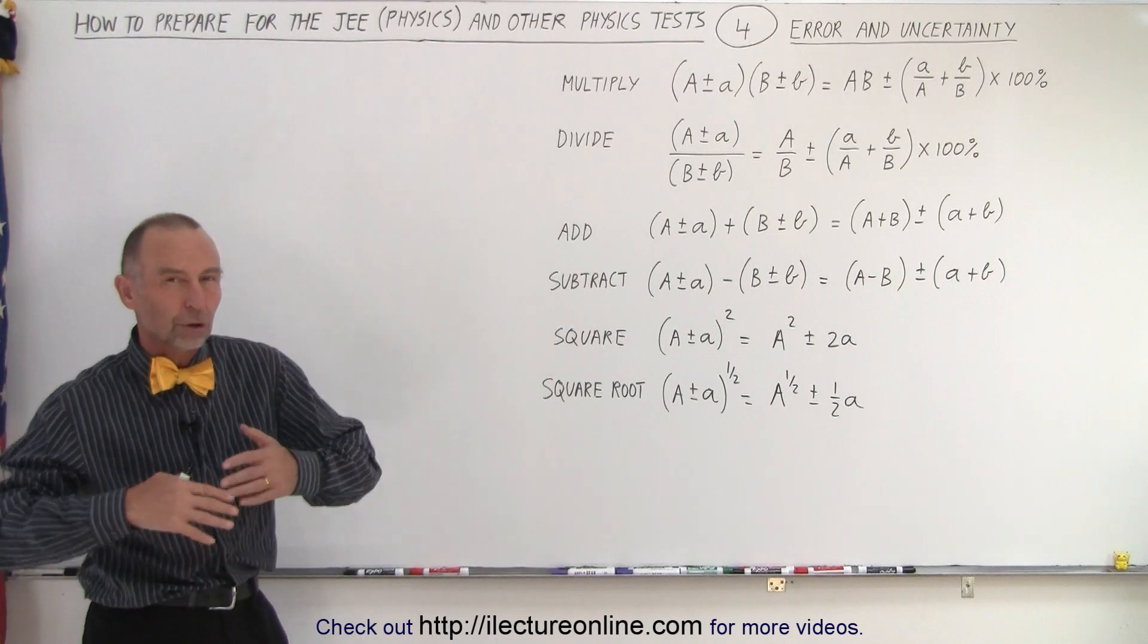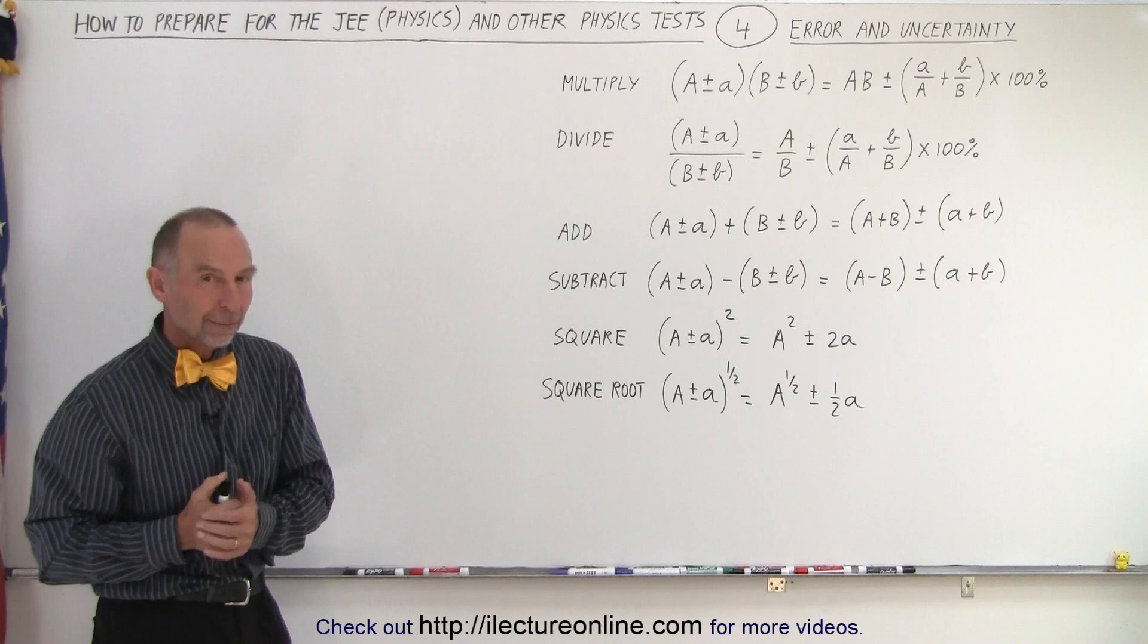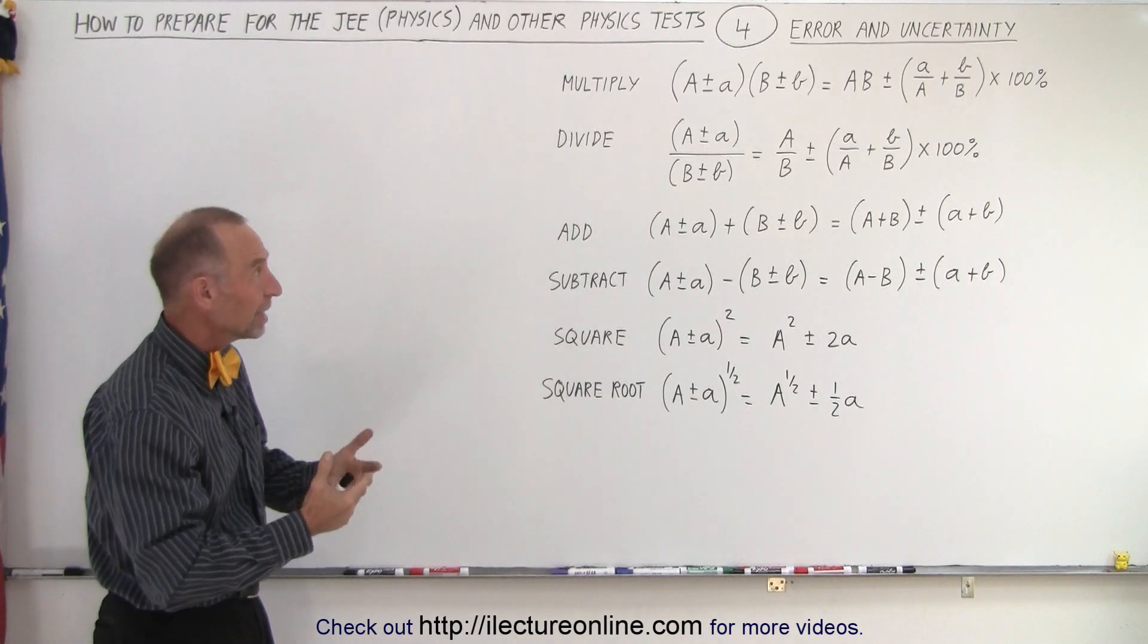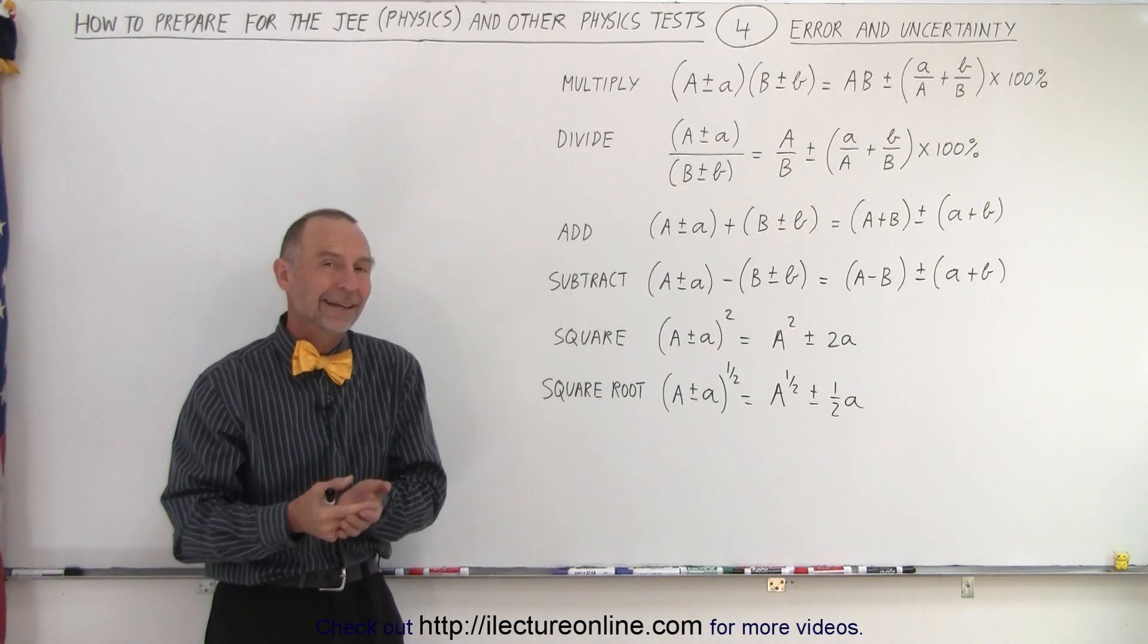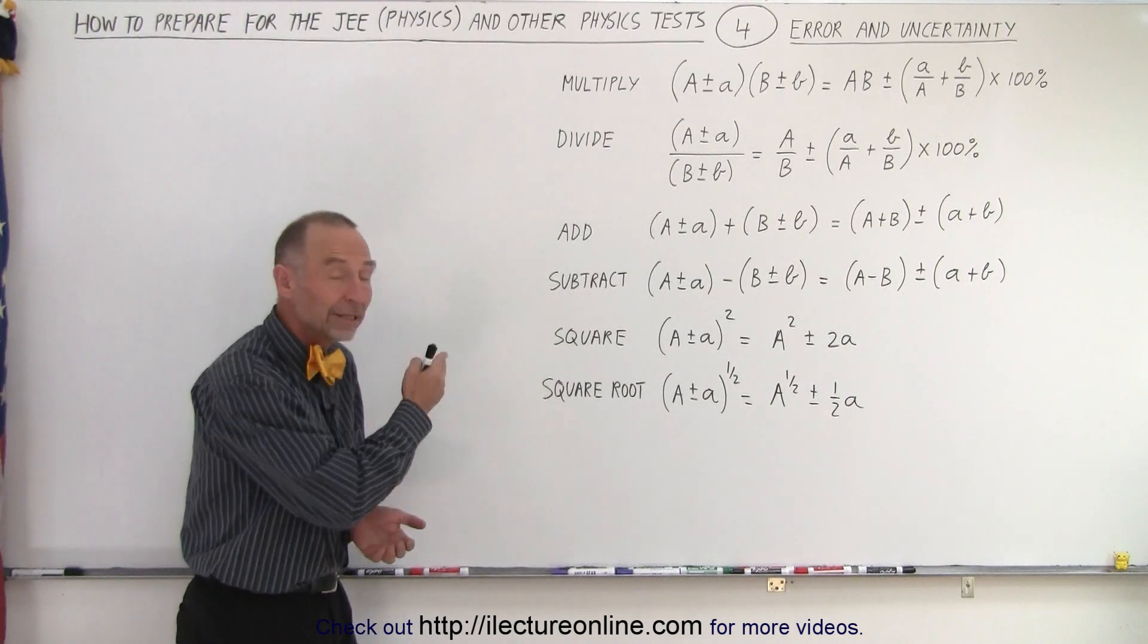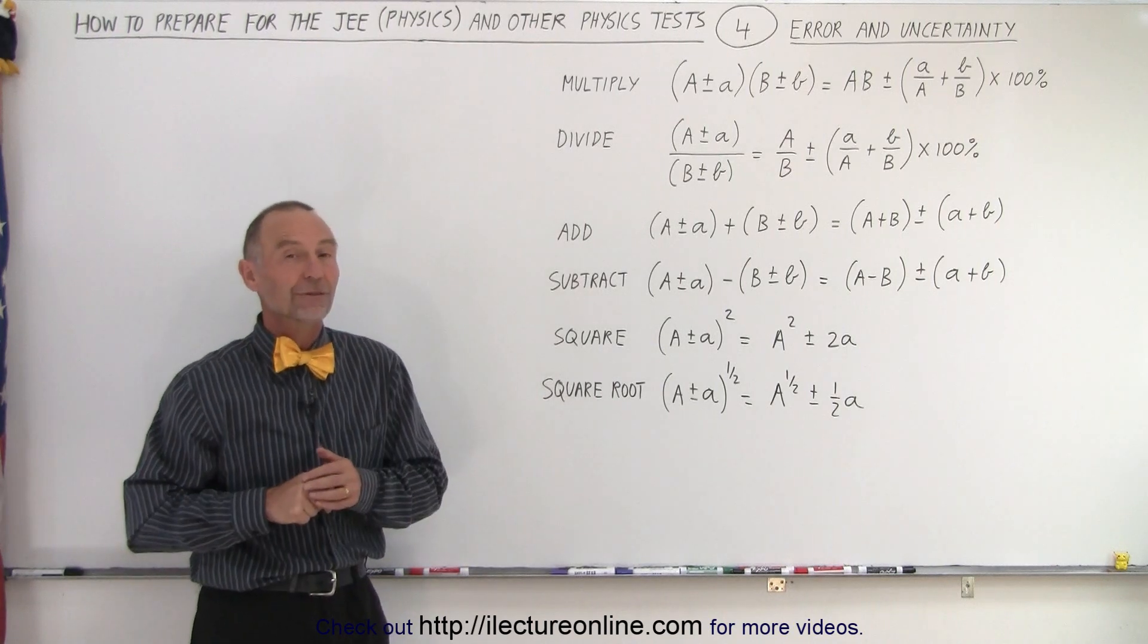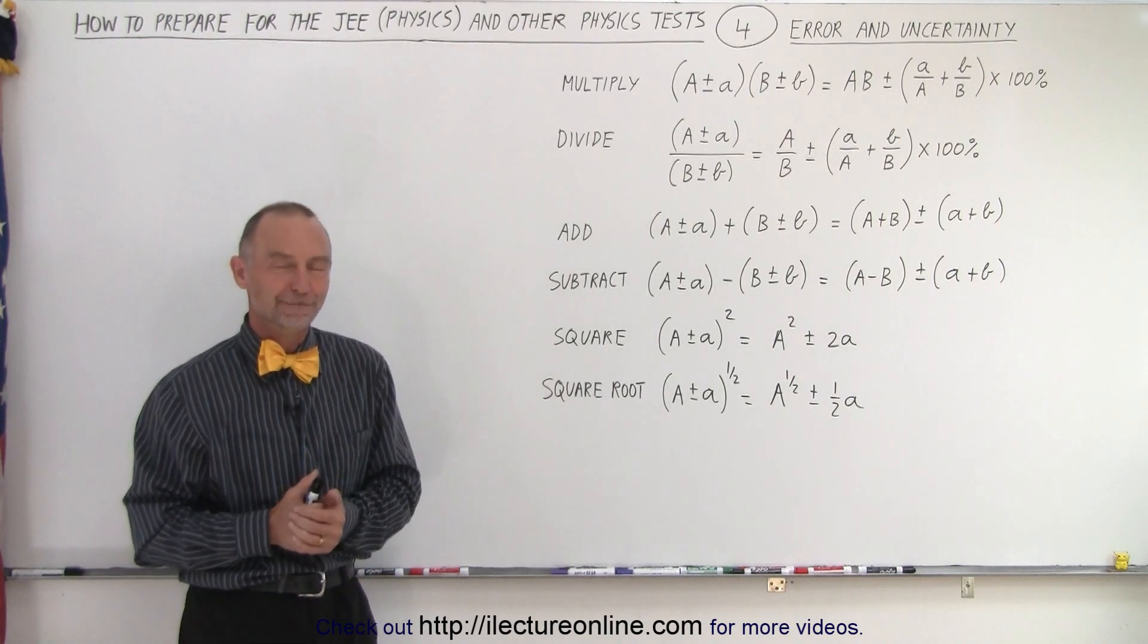So these are some basic rules. They're not a complete set of all the rules, but the basic rules of the basic mathematical processes by which you need to take care of the uncertainties in your measurement. And I've seen in the JEE test that they do indeed have problems where you have to understand how to find the uncertainty in your final answer. And that is how it's done.